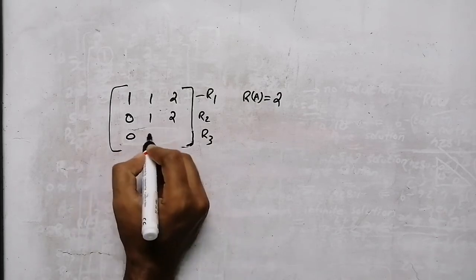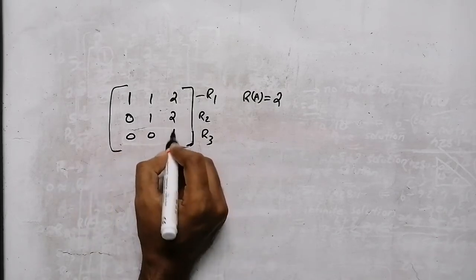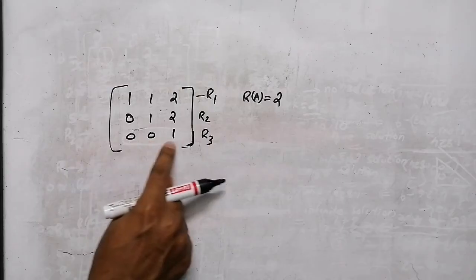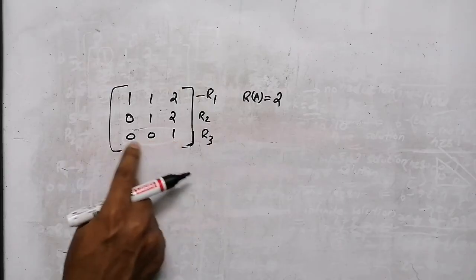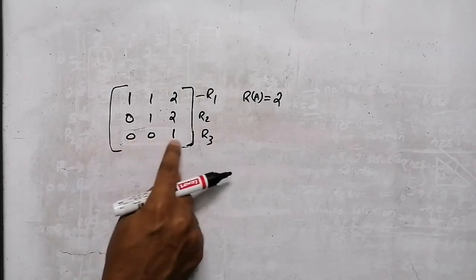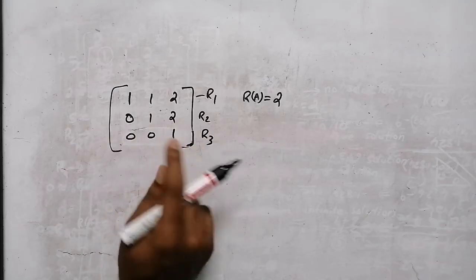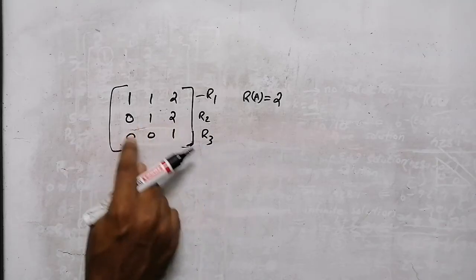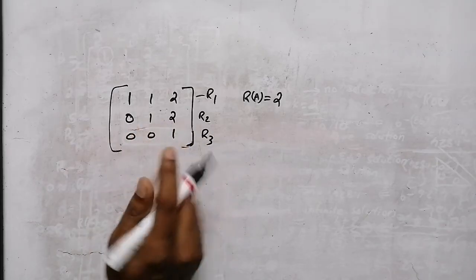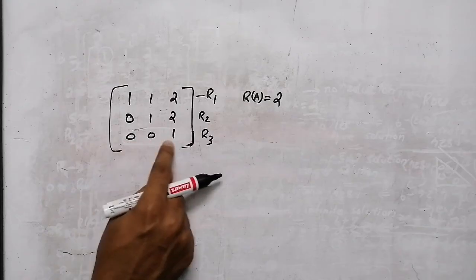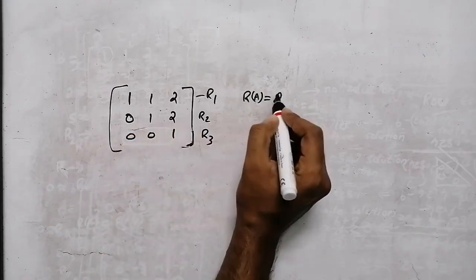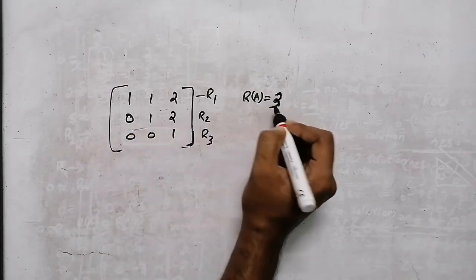Suppose we have a row like 0, 0, 1 with value 4 — that is a non-zero. But if we have 0, 0, 0 with a non-zero constant, then rank of A is 2 but rank of A|B is 3, giving no solution. If the last row is 0, 0, 0 equal to 0, that gives an infinite solution case.